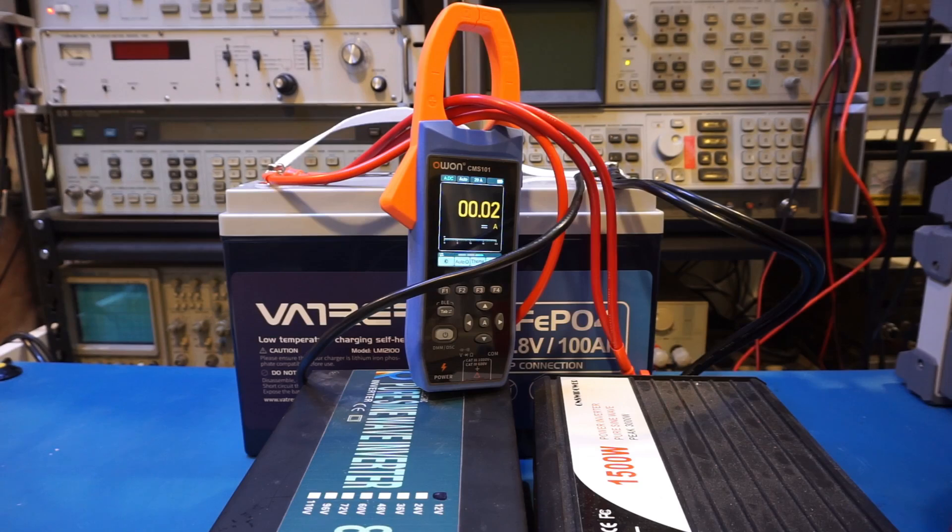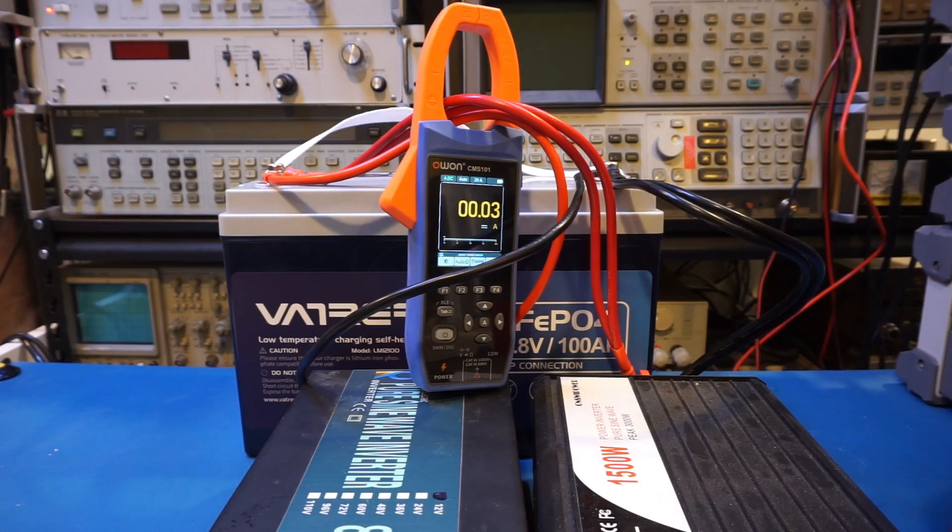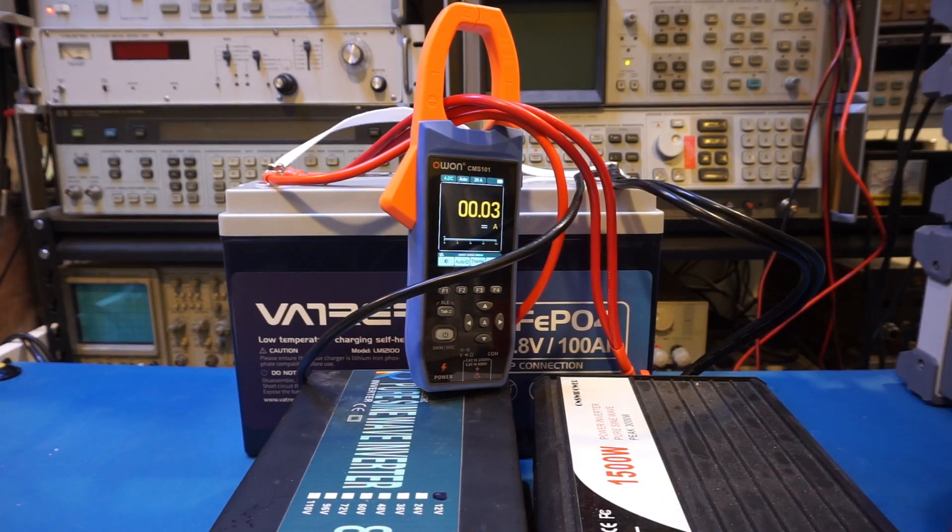Now I want to find out how much margin we have on that 100 amp current rating, so I added another inverter. This inverter is only rated for 1500 watts, so I'm going to use two heaters, one connected to this inverter and the other one connected to this inverter, and use a variac to adjust the output so hopefully we can get a sense of the maximum load the battery can support.